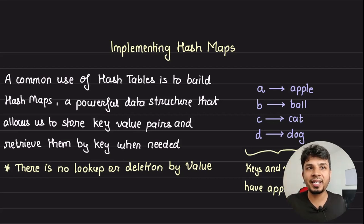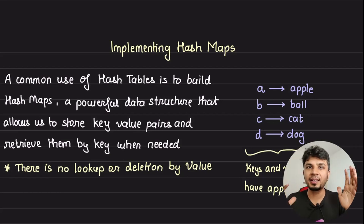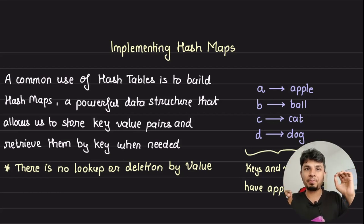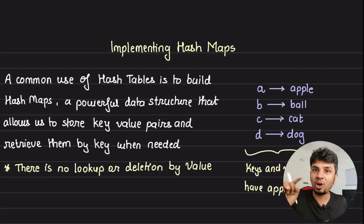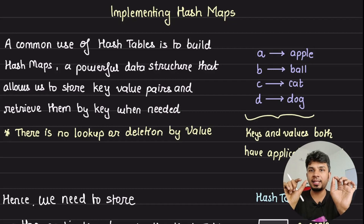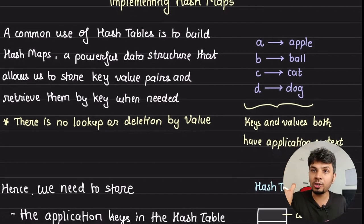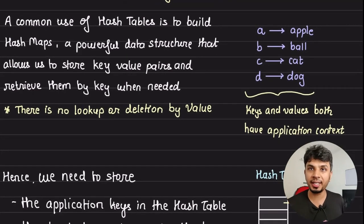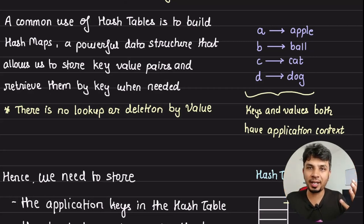Hashmaps are an amazing data structure — so powerful, spanning so many use cases. The core idea is we want to store application-level key-value pairs in a data structure where all accesses are key-based. For example, storing 'a' as key with value 'apple', 'b' as key with value 'ball', 'c' for 'cat', 'd' for 'dog' — and we'd want to do lookups by key. Both key and value have application context, meaning we can place any type of key and any type of value against that key.